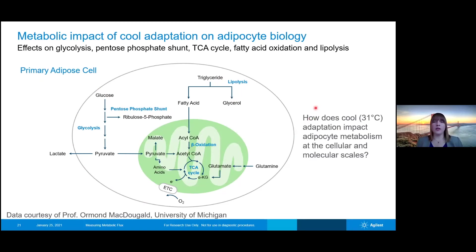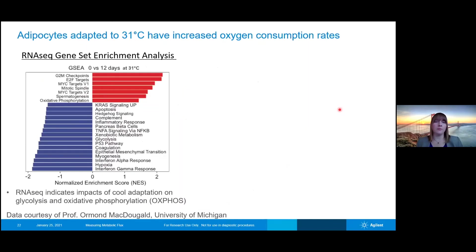We're looking at what happens to these fat cells when they are subjected to a cool temperature over long periods of time. In this particular analysis, some RNA-seq was done. In the RNA-seq data, it was expected that during cool temperature adaptation, oxidative phosphorylation would actually be increasing — the reverse of the previous example — and that glycolysis would be decreasing in these cells.